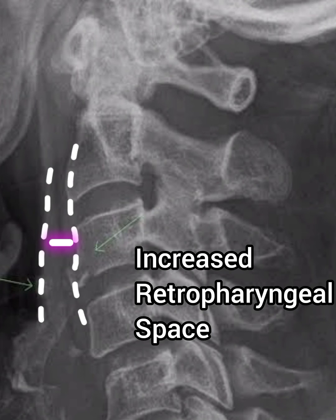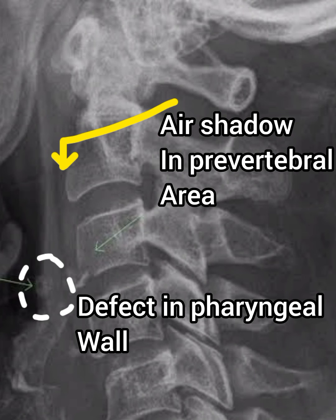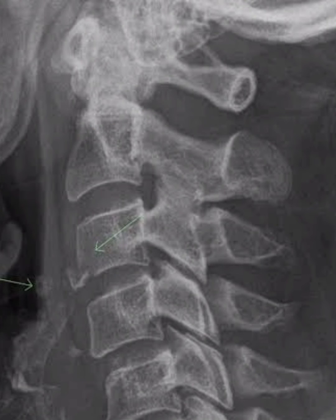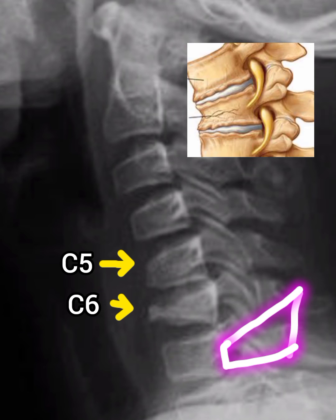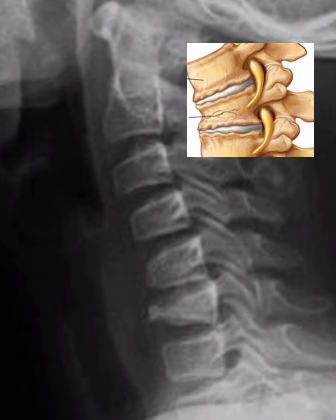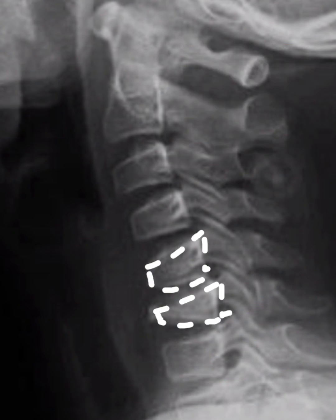A small fragment of the vertebral body is fractured, known as a tear drop fracture. Additionally, there is a widened retropharyngeal space showing an air-fluid shadow in the space, which may be because of an associated pharyngeal or tracheal injury.